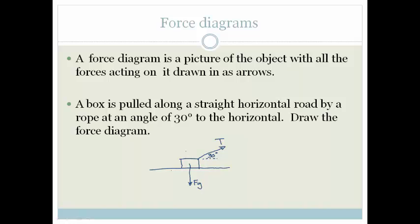This is on the straight road, and therefore the road is holding the box up, so there is a force up, which is the normal force. These forces, the force of gravity and the normal force, are going to be equal in length. That's all the forces that are acting on this.